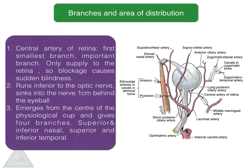The branches and area of distribution of the ophthalmic artery: the first branch, the central artery of the retina, is the smallest yet most important branch, supplying only the retina. Whenever there is a blockage in this artery, it causes sudden blindness. It runs inferior to the optic nerve, sinks into the nerve one centimeter behind the eyeball, and emerges from the center of the physiological cup, giving four branches: superior and inferior nasal, and superior and inferior temporal branches.